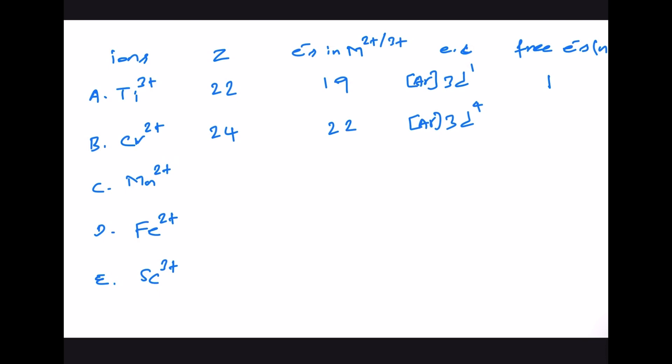For Mn²⁺, the atomic number of manganese is 25. In Mn²⁺ we have 23 electrons, and the electronic configuration is 3d⁵, giving 5 unpaired electrons.